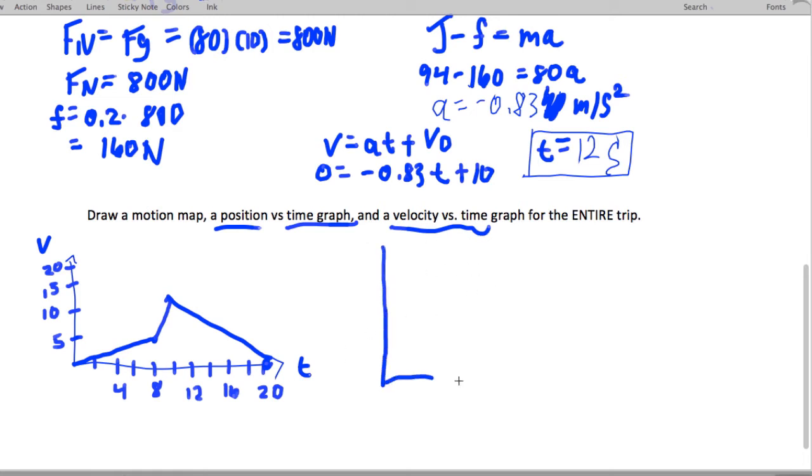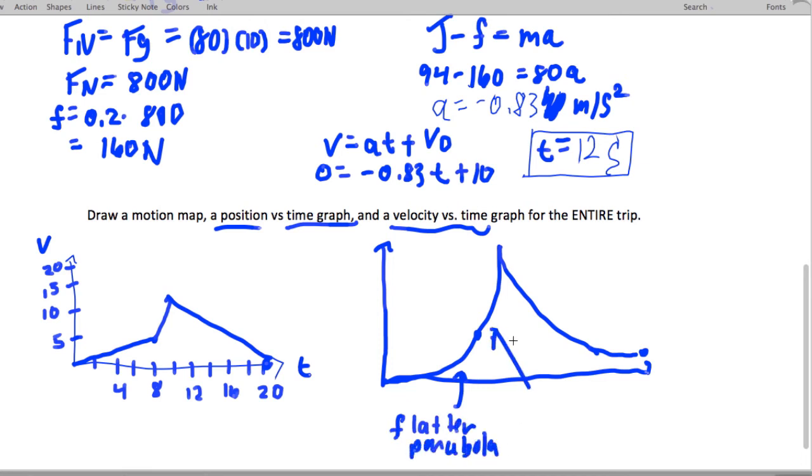Now, if we do the position versus time graph here, let's just try to get it qualitatively. So I'm going to go forward like this, and then I'm going to do kind of a flat-ish parabola, and then I'm going to go really steep in my parabola, and then I'm going to end up slowing down like that. So that's sort of the idea. So it's just kind of a flatter parabola, then we're steeper.